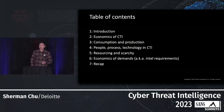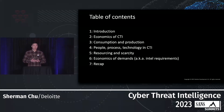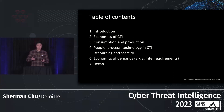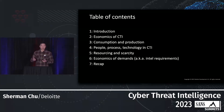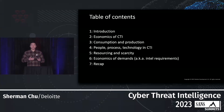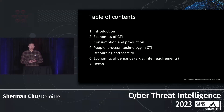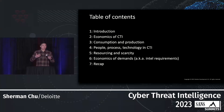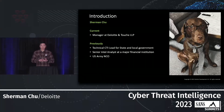Before we begin, a quick rundown of today's agenda. First, an introduction about myself — my background and my dog. Then we'll talk about what economics means in the context of CTI, followed by consumption and production as outputs of CTI operations. Next, people, process, and technology behind CTI, then resourcing scarcity and trade-offs, the economics of demand or intel requirements, and finally a recap with key takeaways.